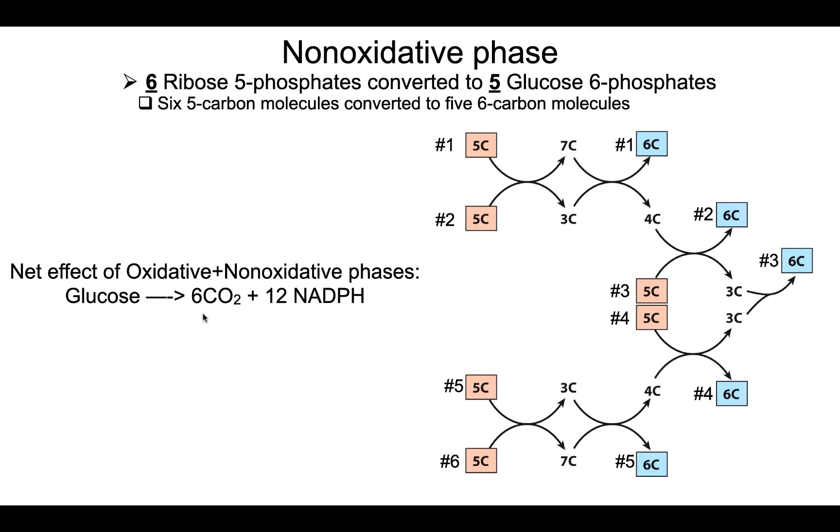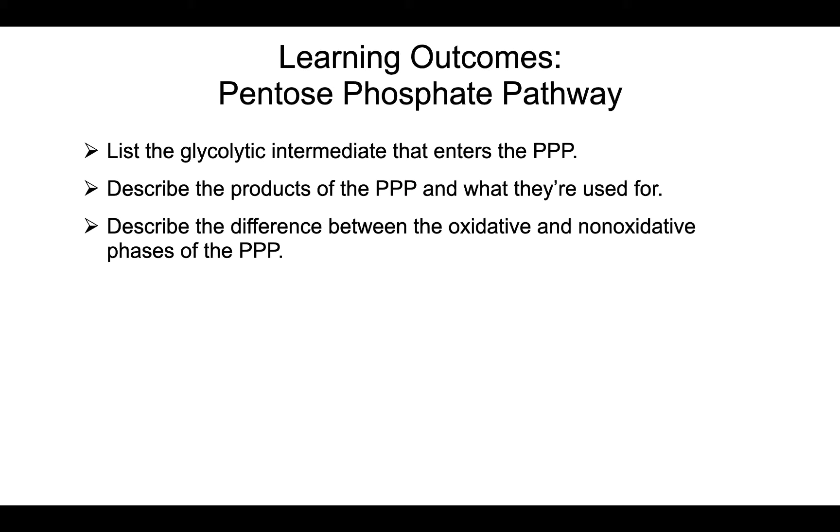So now make sure you review this video and that you can list the glycolytic intermediate that enters the pentose phosphate pathway, describe the products of the pentose phosphate pathway and what they're used for, and describe the difference between the oxidative and non-oxidative phases of the pentose phosphate pathway.